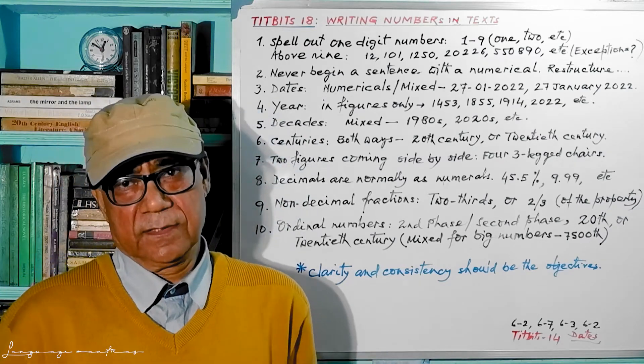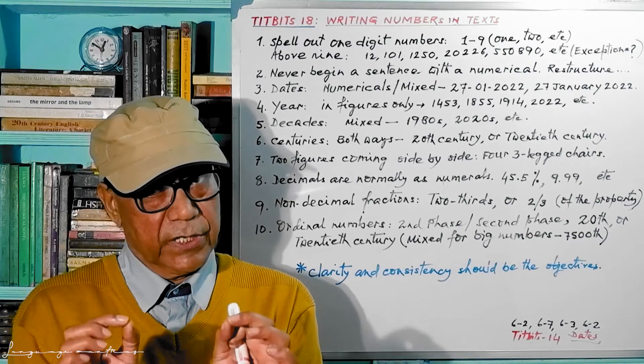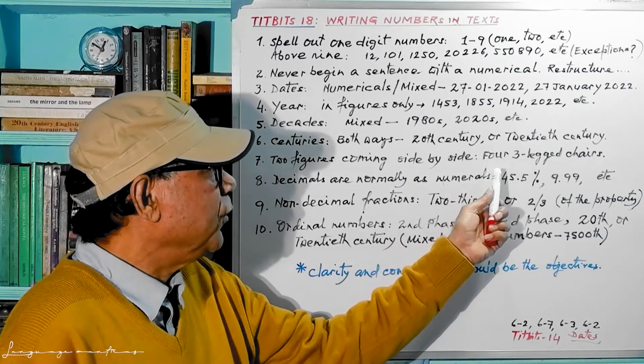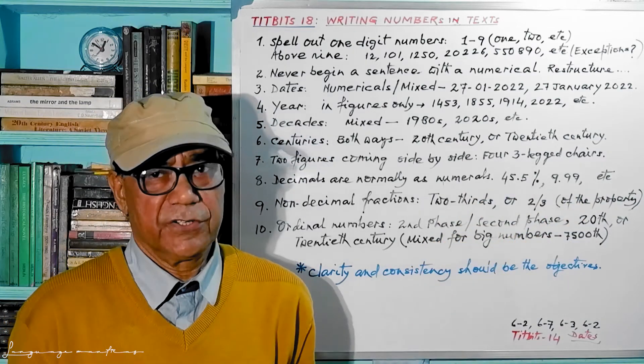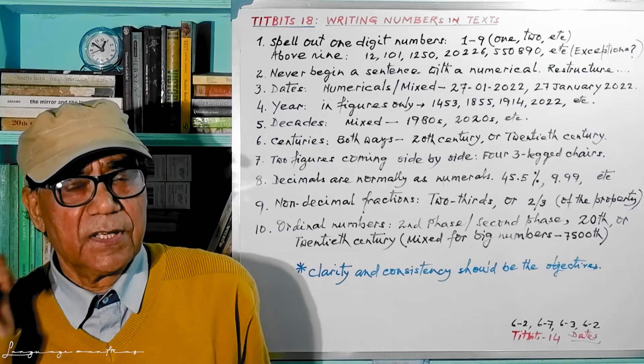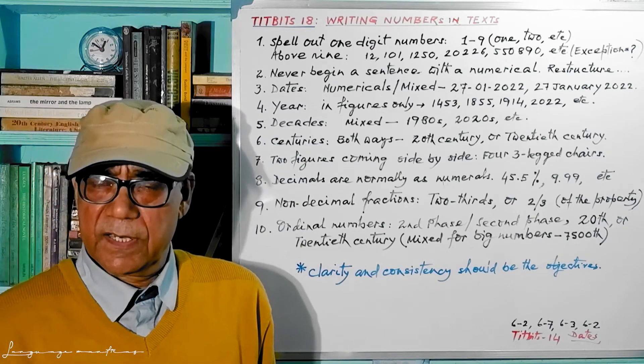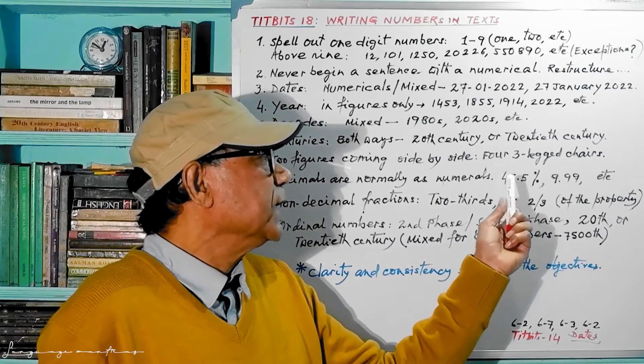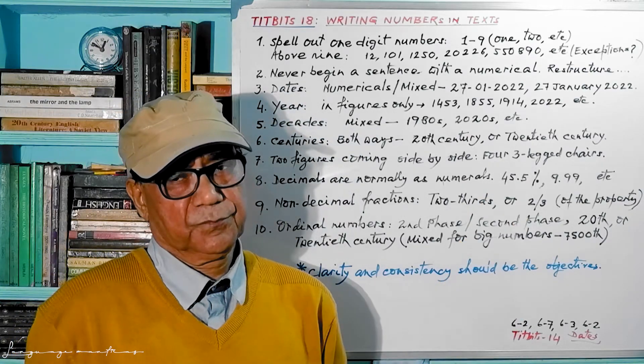Now come to the next point: two figures are coming together, confusing. Two figures coming together side by side, like four 3-legged chairs. Four, then 3-legged chairs. It may become 43 if you are not careful.